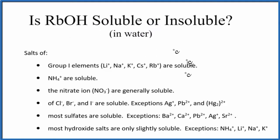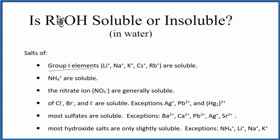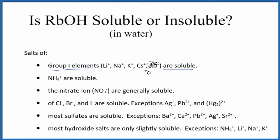When we look at these solubility rules — this is a brief list of solubility rules — we go down group 1 elements. Rubidium, that's in group 1 on the periodic table, those are soluble. So we have our rubidium bonded to our hydroxide. This rubidium ion here with the hydroxide, that's going to be soluble in water.